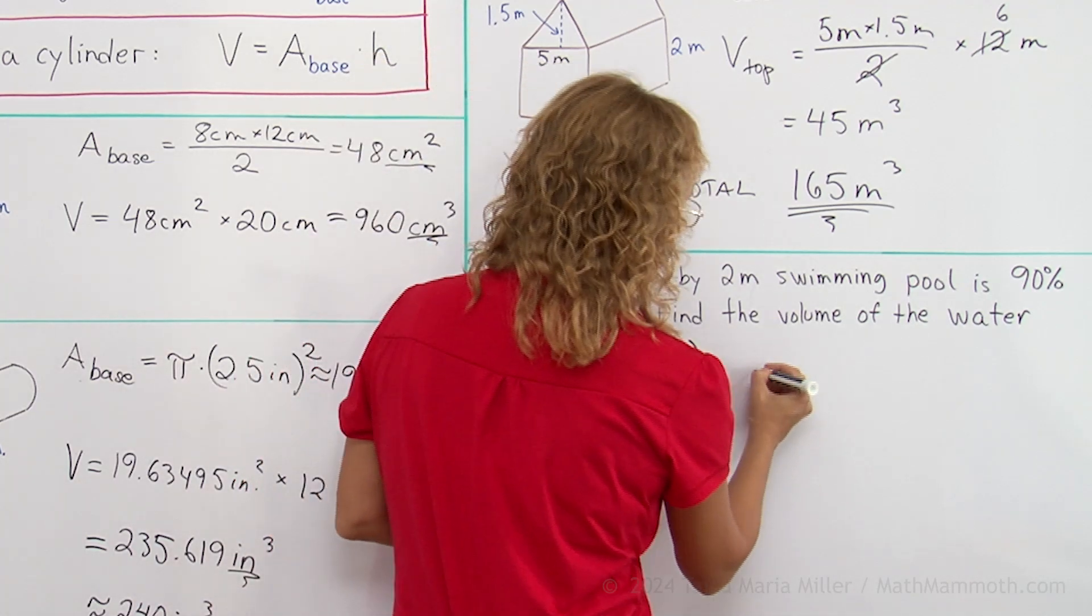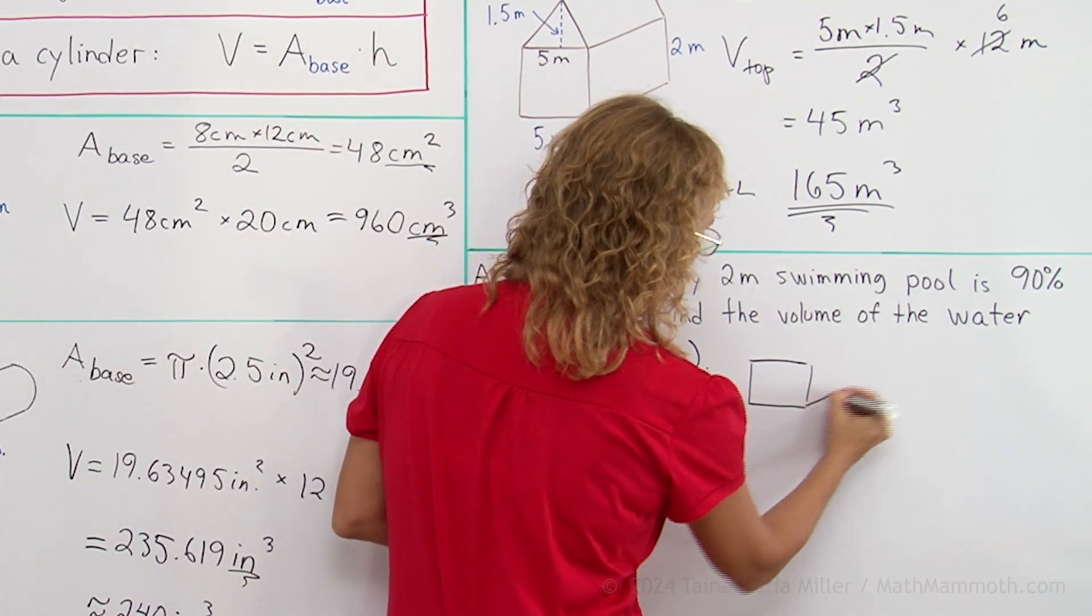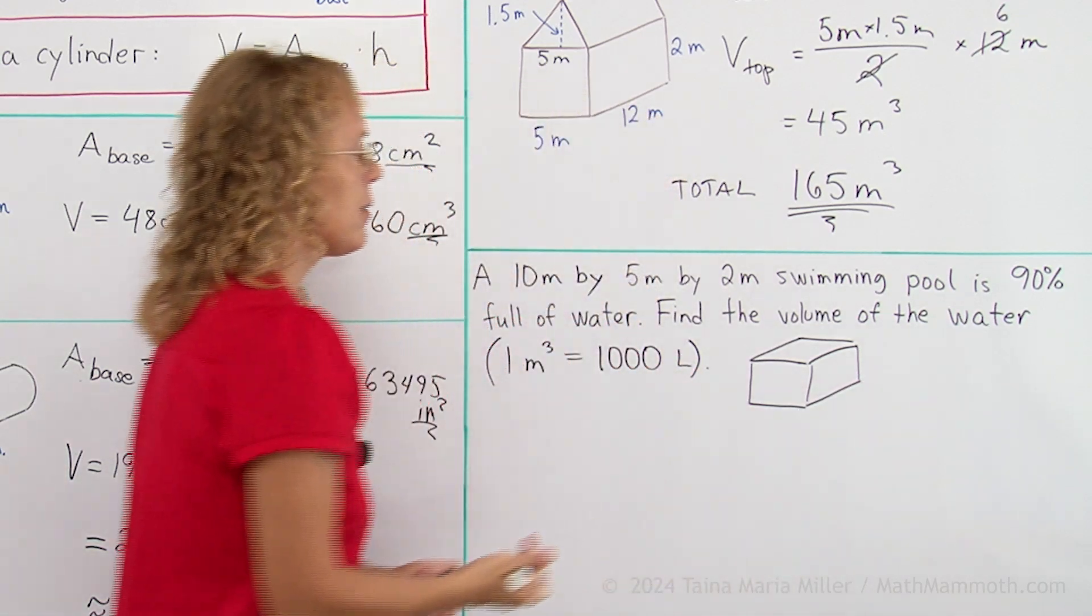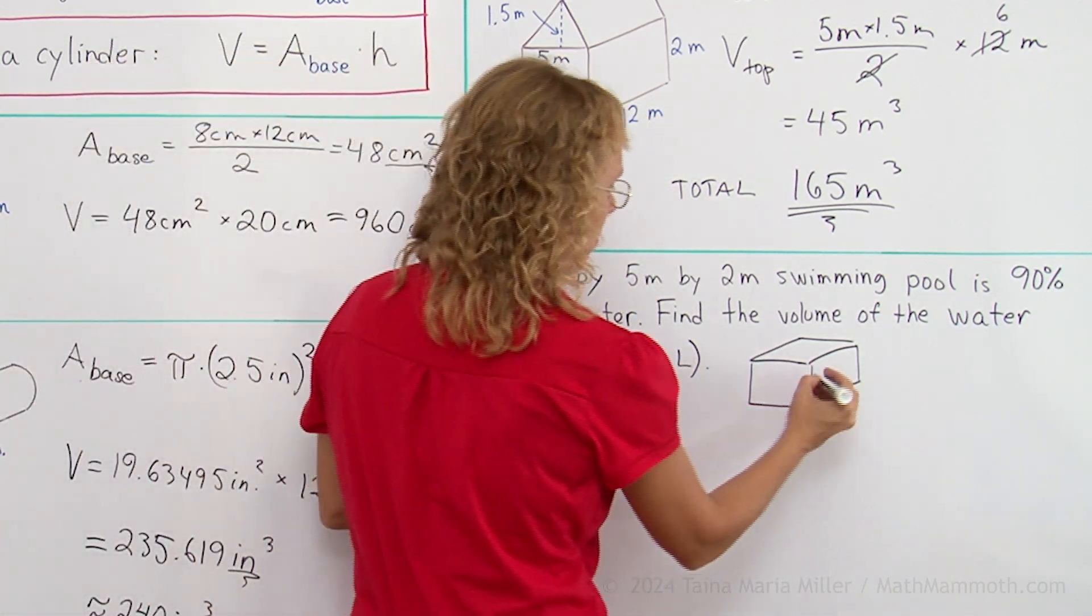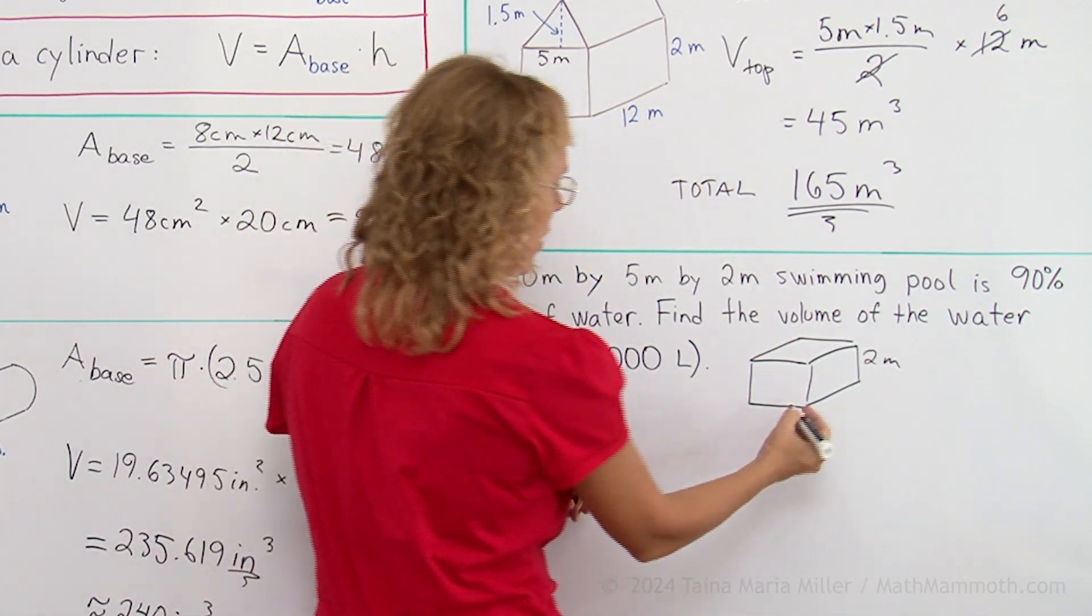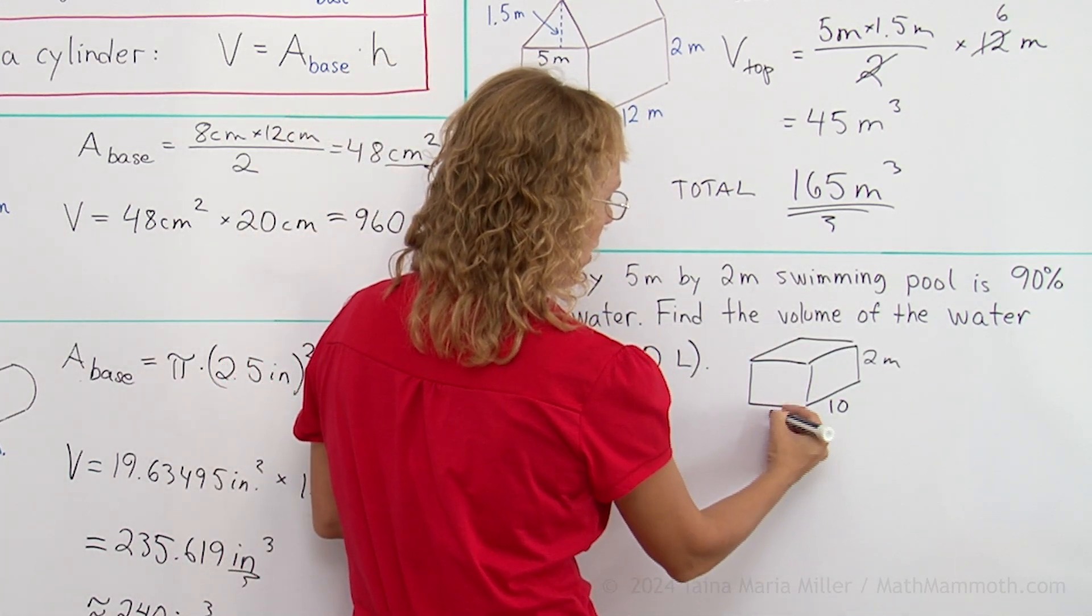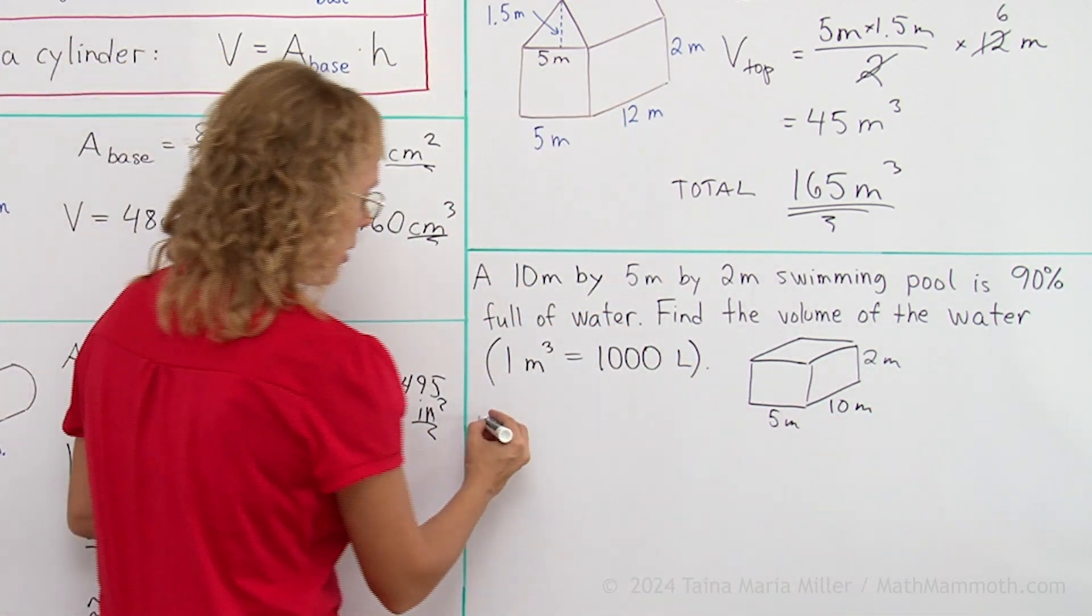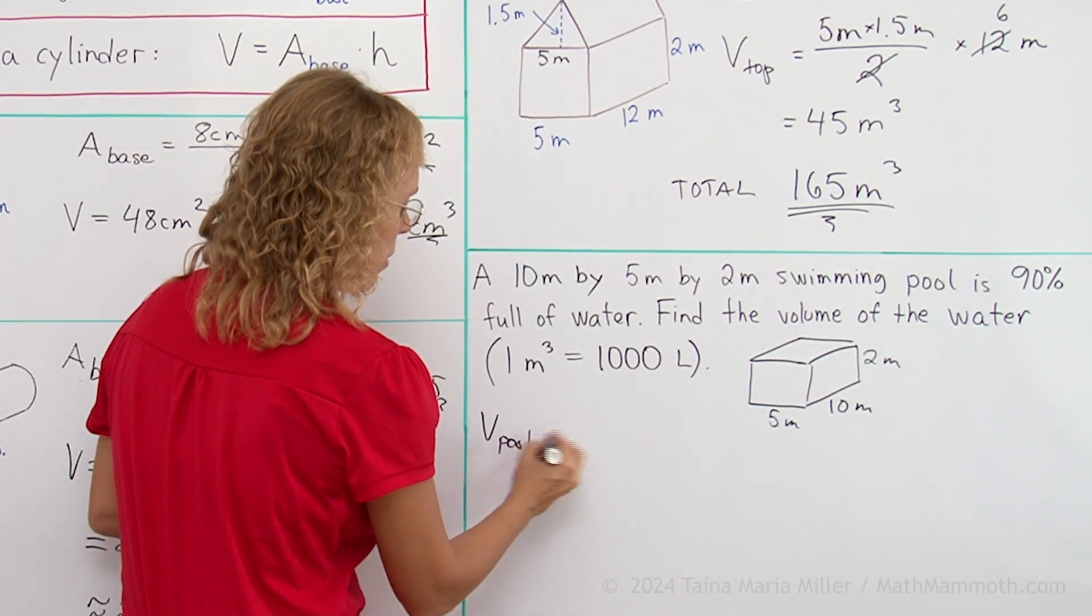If you want to sketch this, like I said, it is like a box, okay? Something like that. So that there's 2 meters is the height or the depth. And then we have 10 and 5 meters. So its volume obviously is just, you just multiply those three dimensions.